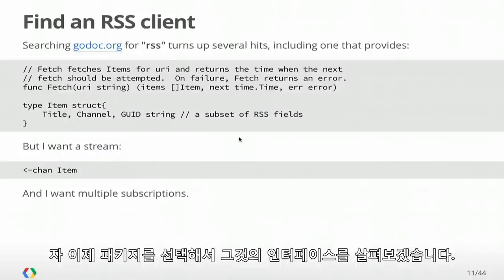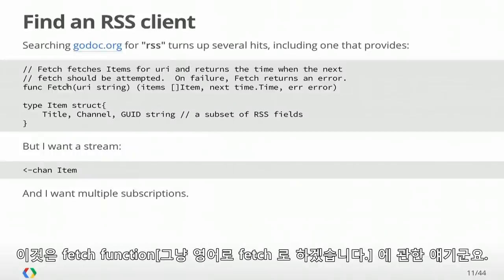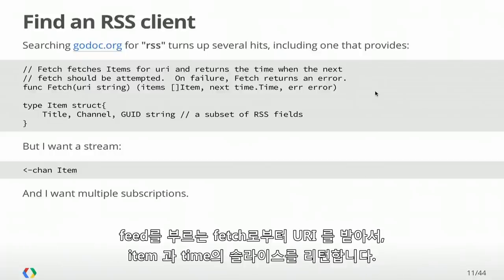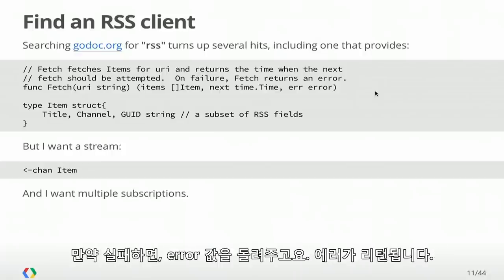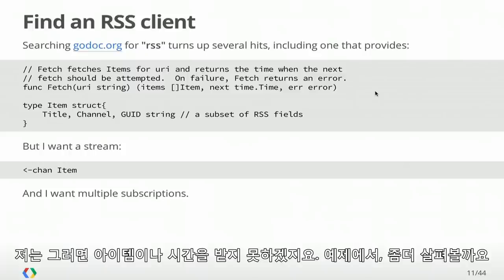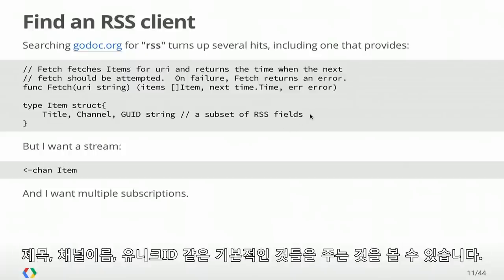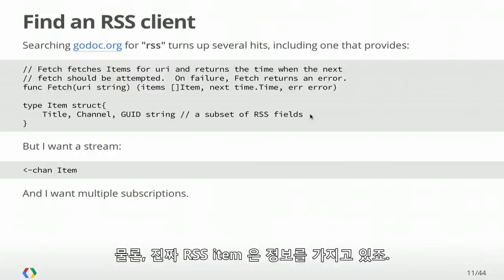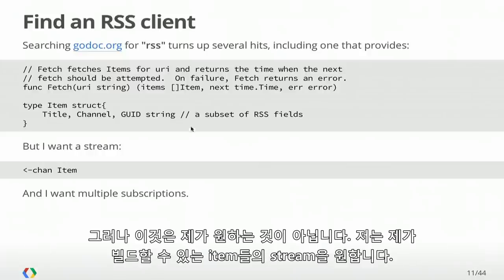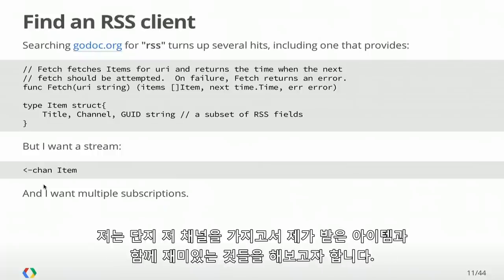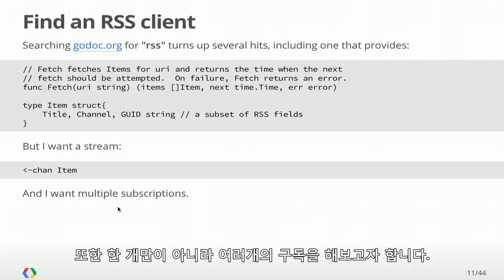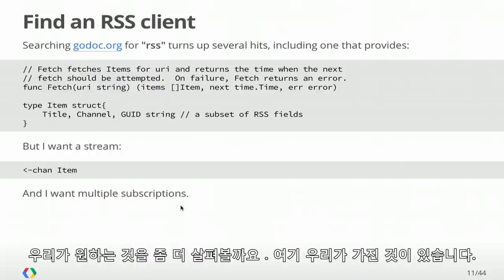I chose a package and started looking at its interface. It provides a fetch function that takes a URI and returns a slice of items and a time — the next time I should try to fetch that feed — or an error on failure. I'm going to strip down an item to just basic elements: title, channel name, and unique ID. But this isn't what I want. I want a stream of items I can build a UI on top of — really a channel of items, where this receive-only channel arrow means I just want to suck on that channel and do interesting things with the items. I also want multiple subscriptions, not just one.